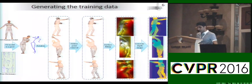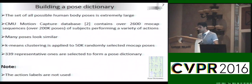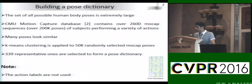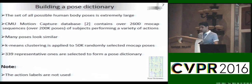This figure shows an overview of the proposed pipeline for generating such training data. The first step is building a pose dictionary. The set of all possible human poses is extremely large, so we build a dictionary that contains the most representative ones. We use the CMU mocap dataset which contains over 200,000 poses of human subjects in a variety of poses, but many poses look similar. We apply k-means clustering to 50,000 randomly selected mocap poses and select 339 representative poses to form a pose dictionary. Note that we don't use action labels provided with the CMU mocap dataset.